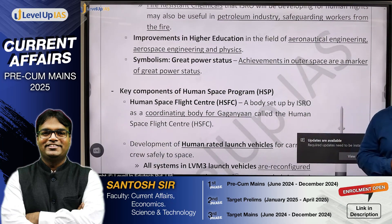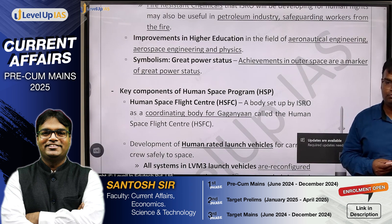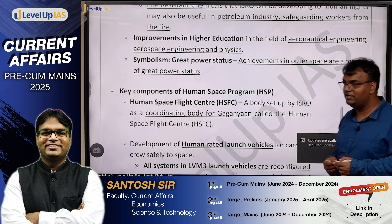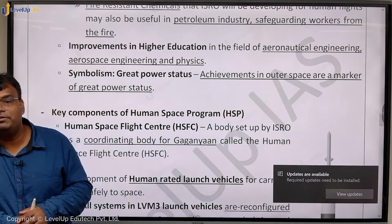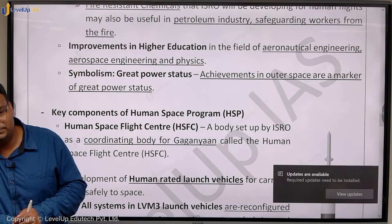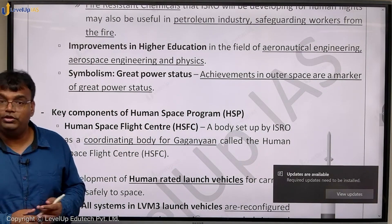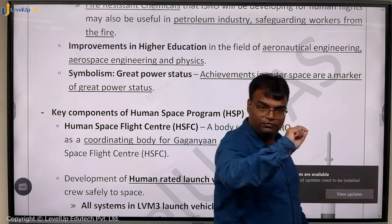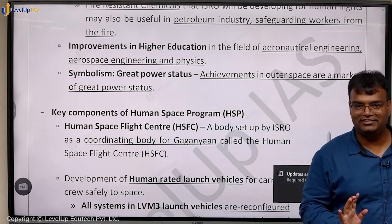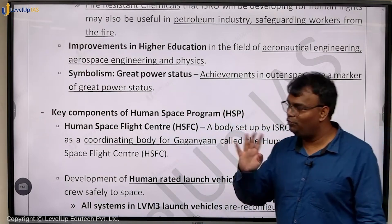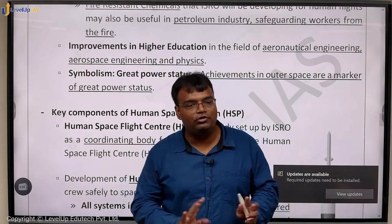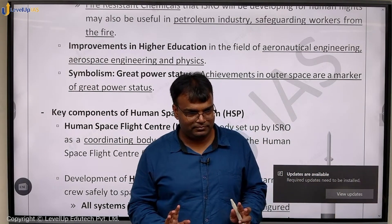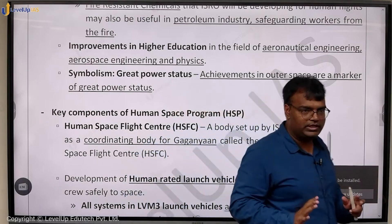Finally, there is symbolism, soft power, and great power status. If only three countries have done it and we end up doing it, we will be among the four countries in the world which have the capability of sending humans to space. When we write about significance, we should cover all these dimensions to fetch more marks.